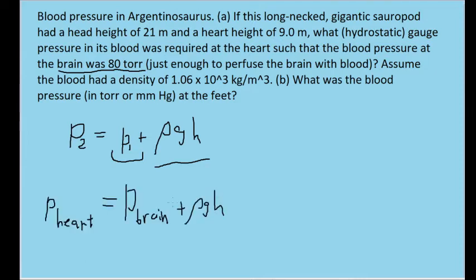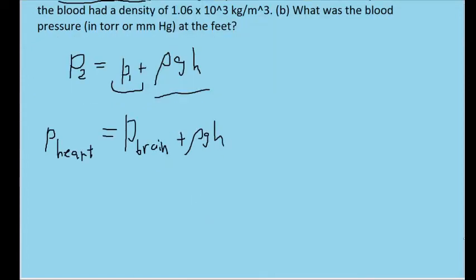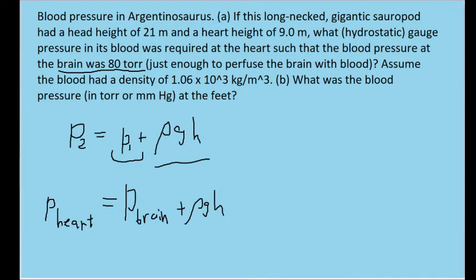For part A, we want the pressure at the heart, and that's going to equal the pressure at the brain at the top of the dinosaur plus the pressure difference due to the height difference between the heart and the head. For part A, we'll use the pressure at the brain, 80 torr.